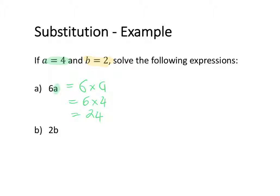Now in the second example, we want to find the value of 2b. So the variable in this one is b, and we know that b is equal to 2. So this time when we solve it, we're going to write out the expression, this time adding in the missing multiplication sign. So that is equal to 2 times b.